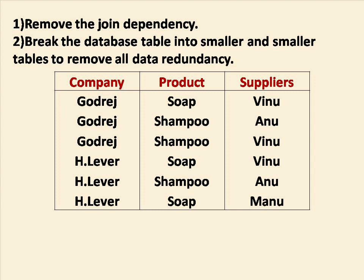This table is called Company, Product, Supplies. From dependency and join dependency, the columns are split into separate tables — Company, Suppliers, and Product Suppliers — to avoid repeating attributes.